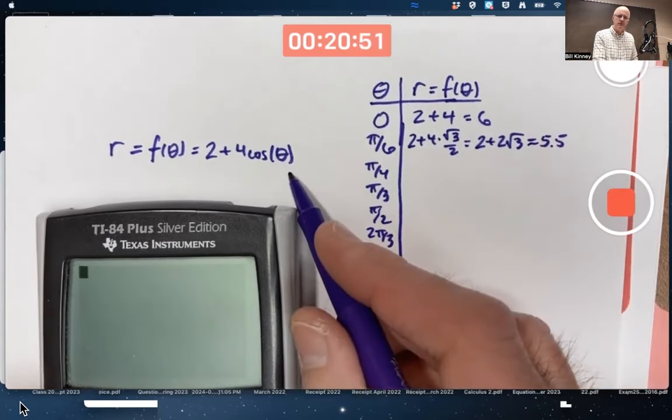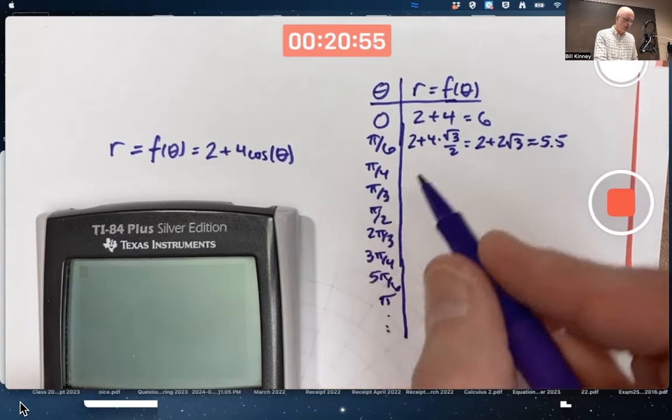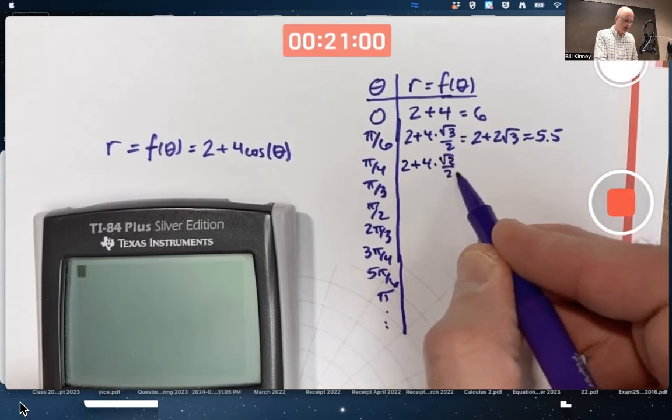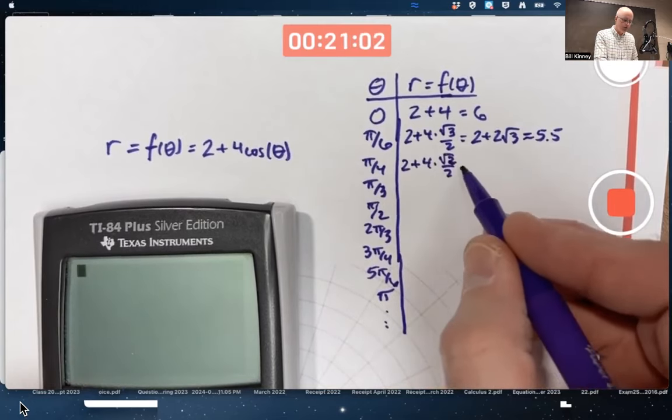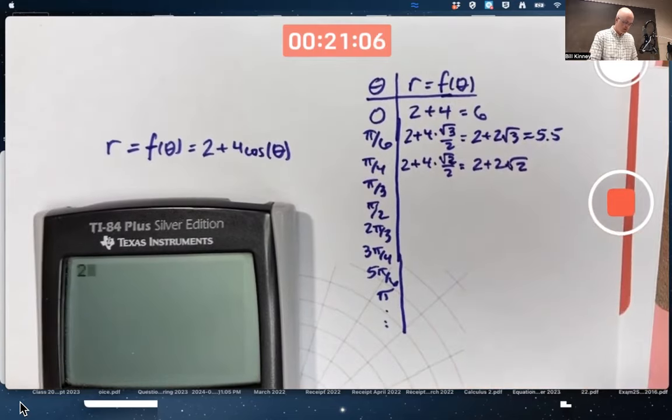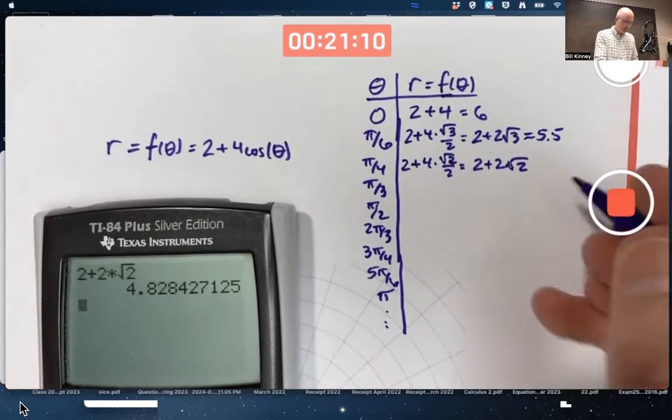When theta is pi over 4, 45 degrees, cosine is square root of 2 over 2. So I get 2 plus 4 times square root of 2 over 2, not square root of 3 over 2. 2 plus 2 root 2. 2 plus 2 times root 2, about 4.8.